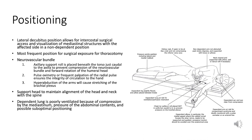Over-stretching or hyper-abducting the arms can stress the brachial plexus — a network of nerves sending signals from the spine to the shoulder, arm, and hand — potentially resulting in numbness, weakness, or paralysis. It is crucial to ensure the head and neck remain aligned with the spine to prevent undue strain or postoperative complications related to the nervous system.